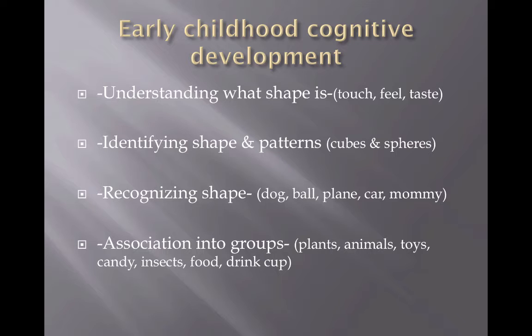Now, early childhood cognitive development. When I was in grad school doing research on cognitive development, I learned that from the time they're born, little kids understand what shapes are through touch, feel, and taste — understanding the difference between a circle and a square. The next thing we do is identify shapes and patterns. Remember that toy where you had a square block and could only fit it in the square hole? And then you had the round donuts that got smaller in different colors and you'd stack them back on? That promotes cognitive development in kids.